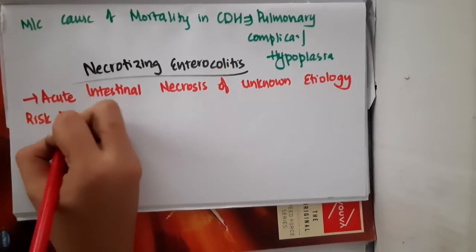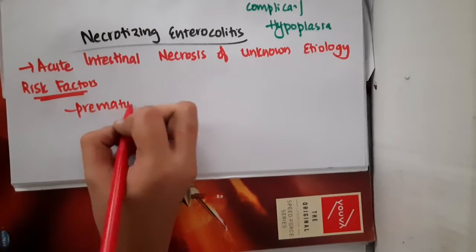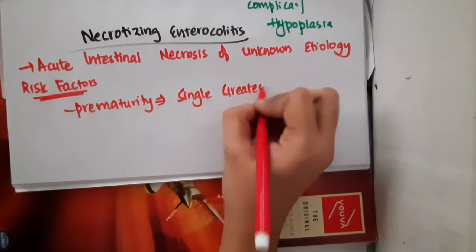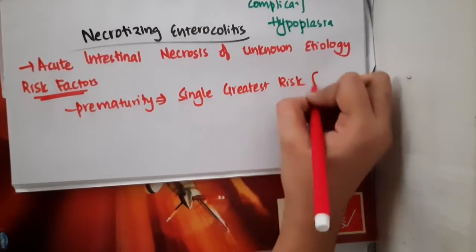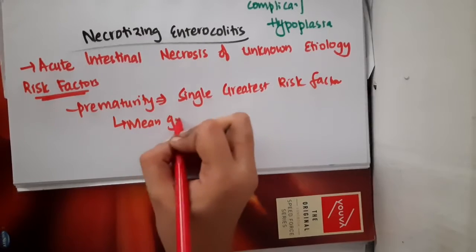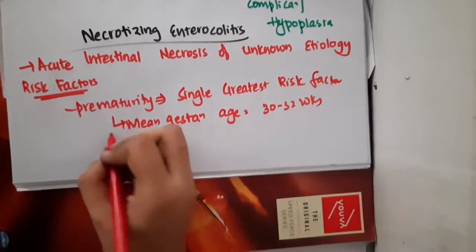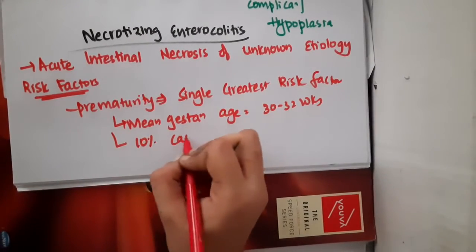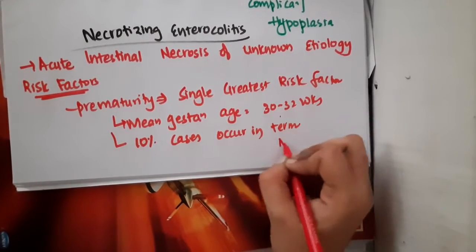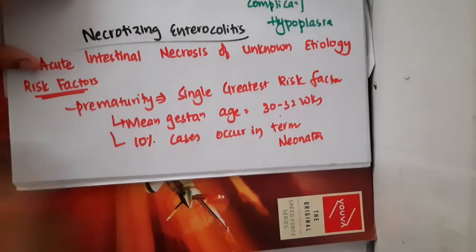The risk factors include prematurity, which is the single greatest risk factor. The mean gestation age is 30 to 32 weeks. About 10% of cases occur in term neonates, and the rest mostly occurs in premature babies.